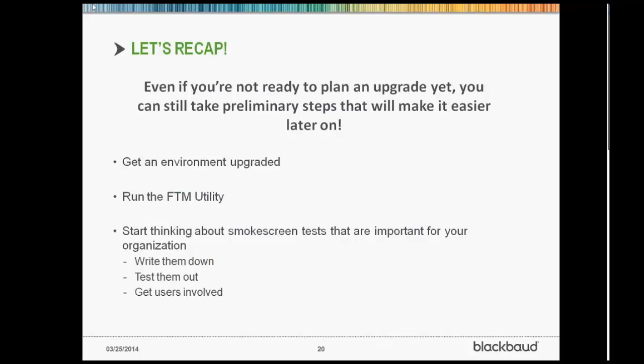Just to recap: even if you're not ready to actually sit down and plan out deadlines for an upgrade yet, we really want to encourage you to take some early steps that are going to make things easier for you later on. Get an environment upgraded — this whole team here on the line can help with that. If you need help creating that environment, getting it upgraded, getting it set up, we can help you run the FTM utility. That's going to give you a list of areas in the system where you might want to check for a performance hit, or maybe everything is good to go. And at the same time, start thinking about smokescreen tests that are important specifically for your organization — write them out, test them out, get users involved.